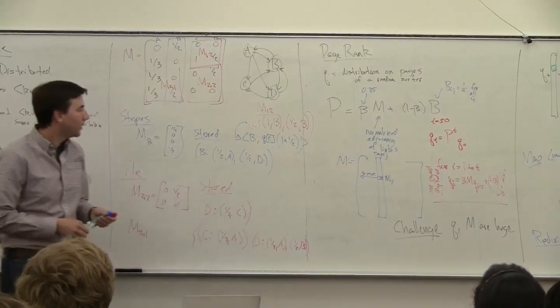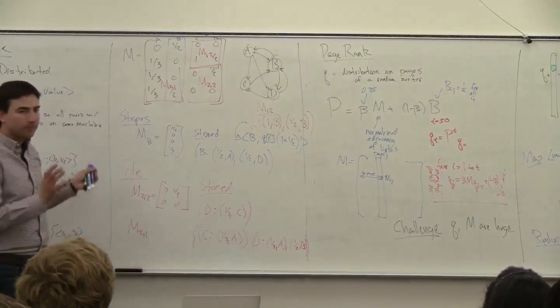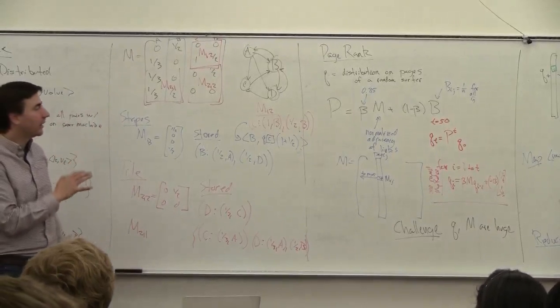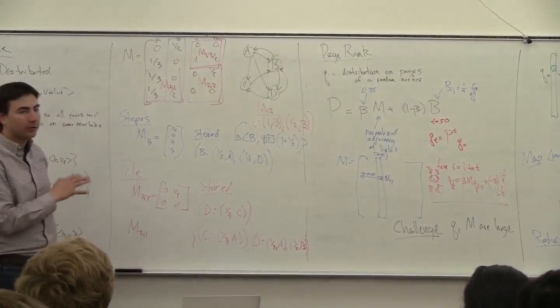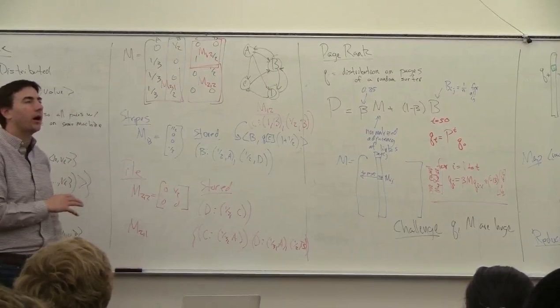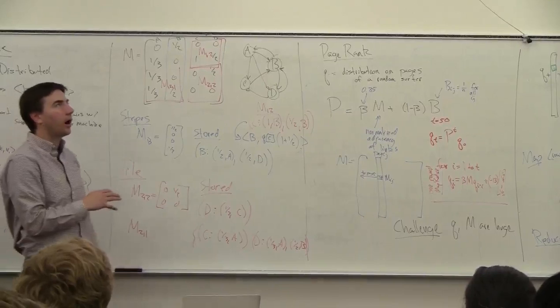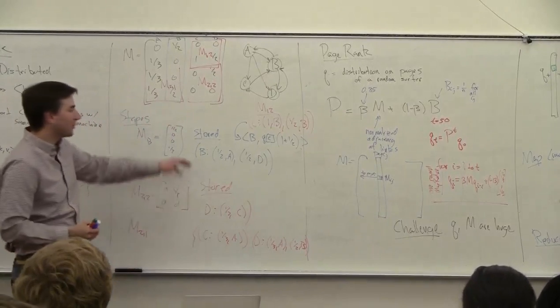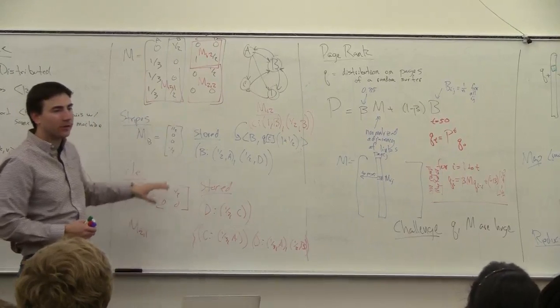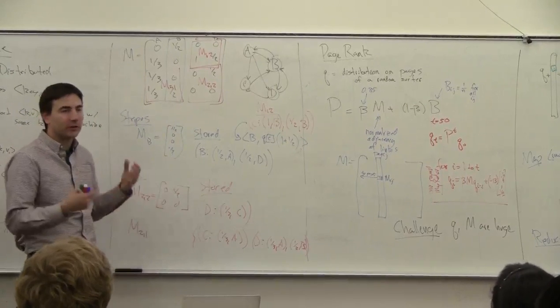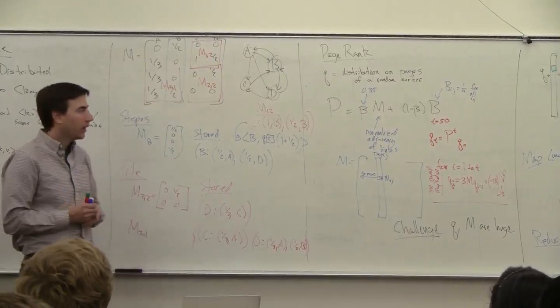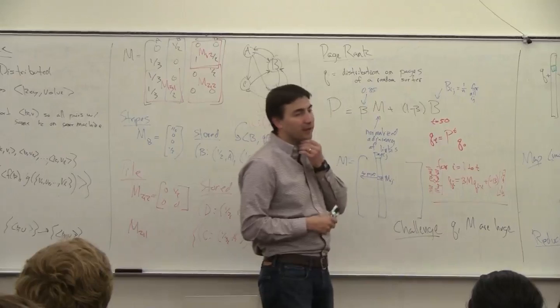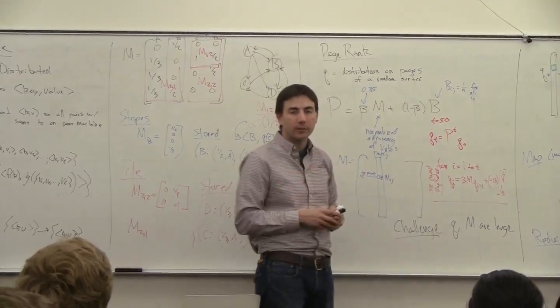All right. So this is the gist of how MapReduce is done, how PageRank is done on MapReduce. So each of these, the steps of this, each of the Map and Reduce function is going to take in things like this, and it's going to be very simple. But by deciding how you break up this matrix, it can actually make certain improvements pretty easy.